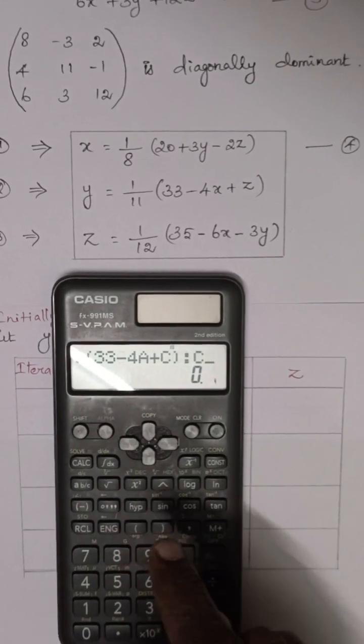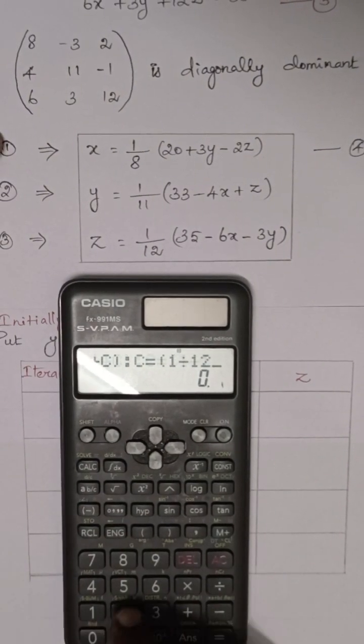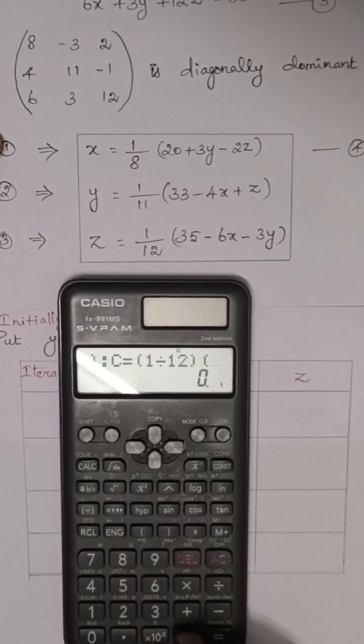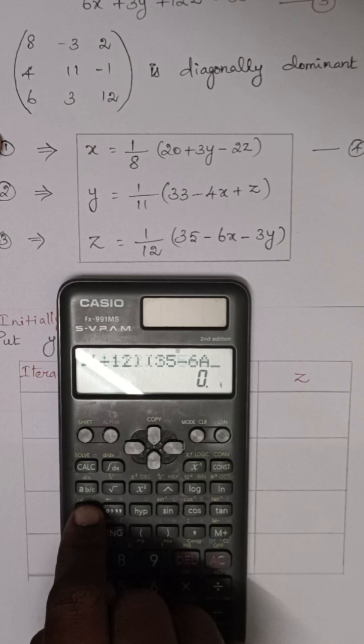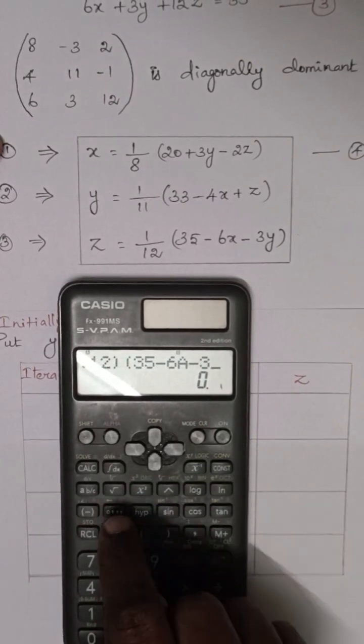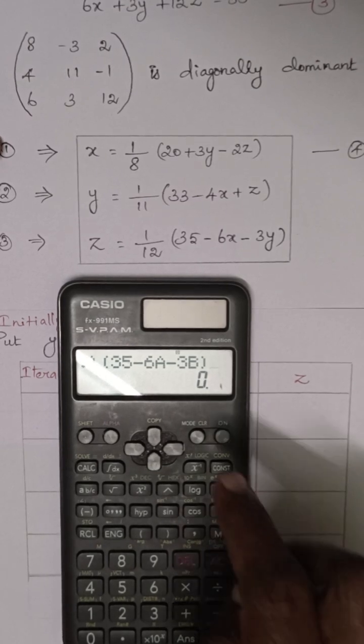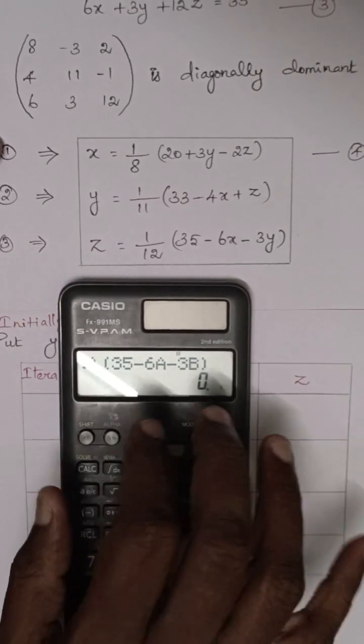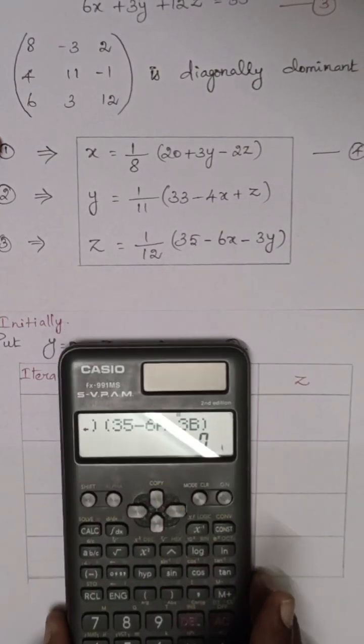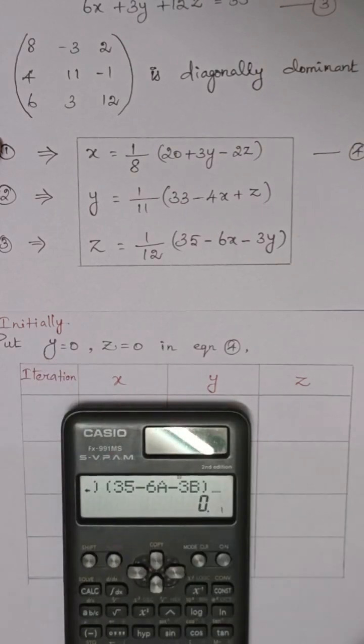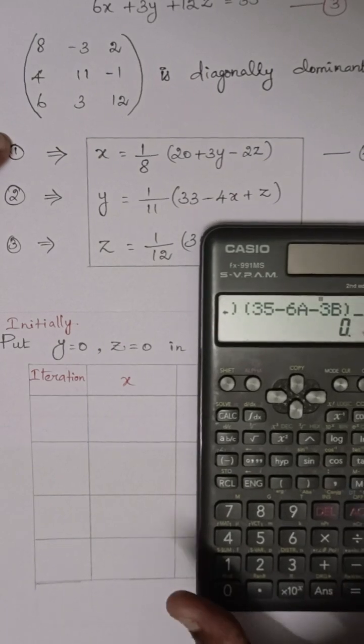Again alpha colon. Then last third equation: c equals open the bracket, 1 divided by 12, close the bracket and again open 35 minus 6a minus 3b. Now three equations are fed.